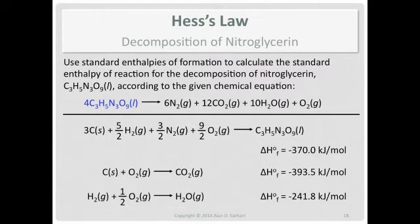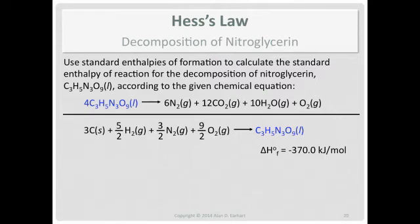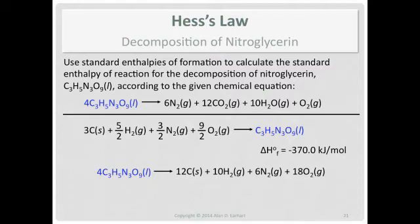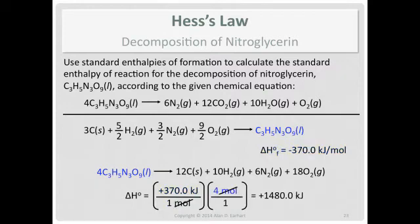I'll start with the nitroglycerin, which means I'll take the first thermochemical equation. Two things that are problems. One, I need nitroglycerin as a reactant. Two, I need four moles of nitroglycerin. So I reverse the reaction, and I multiply all the coefficients by four. Then I take the standard enthalpy of formation, I change the sign because I reversed the reaction, and now I multiply it by four, because I took four moles.